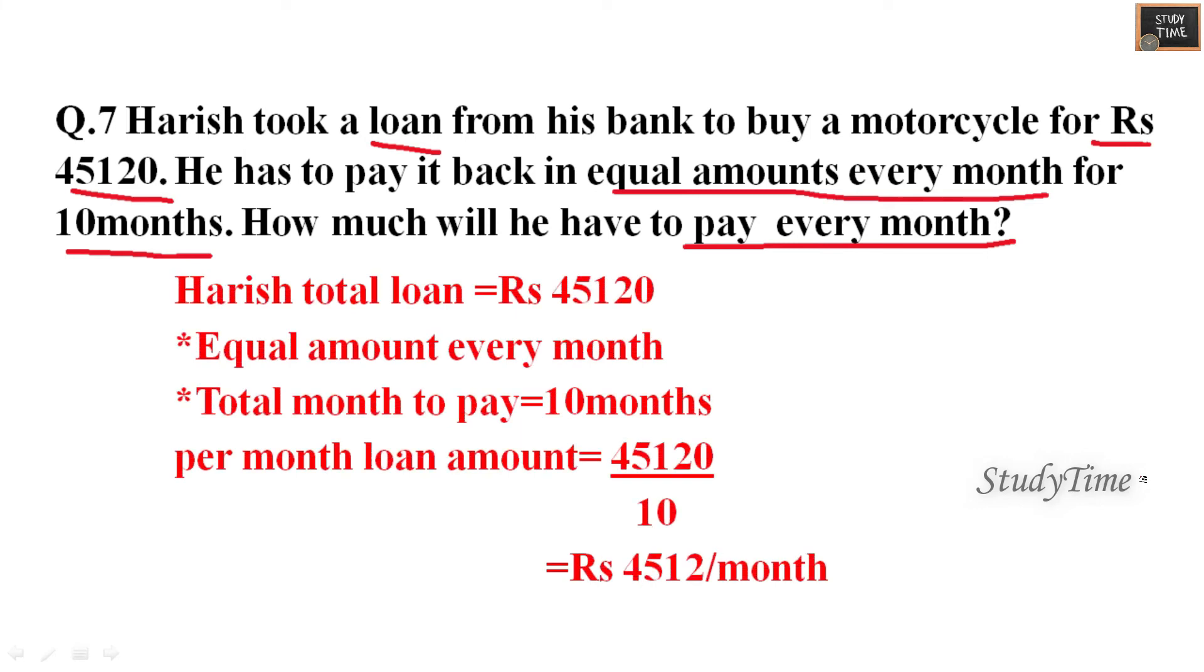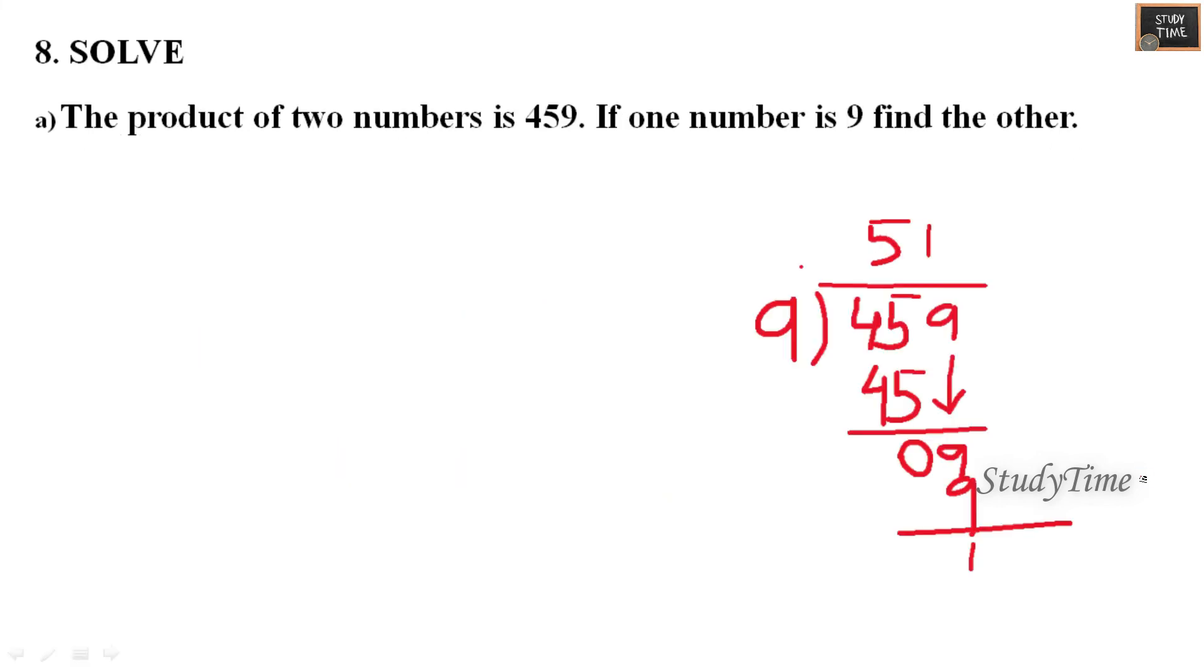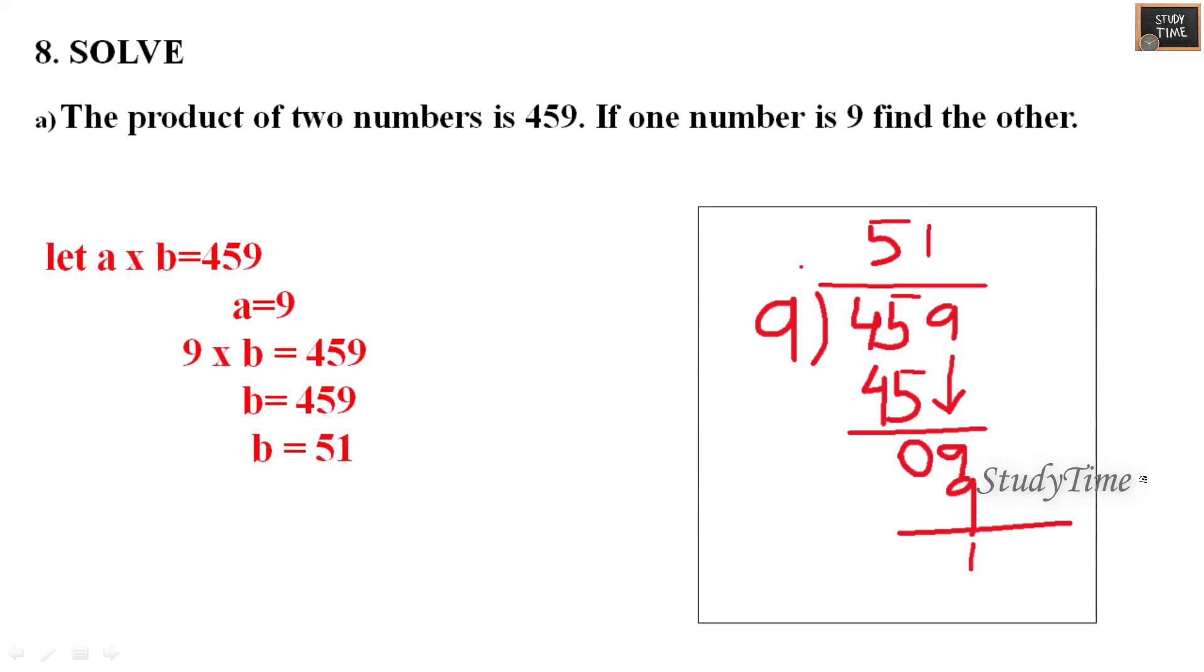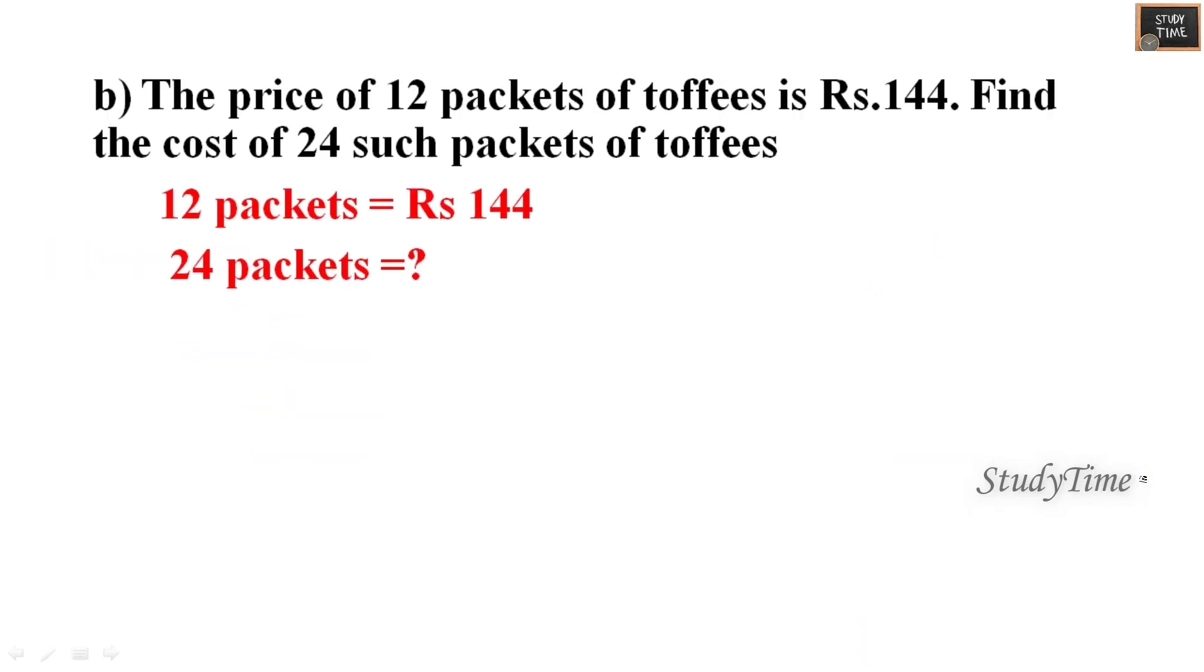The product of two numbers is 459. One number is 9, another number is 51. Next, the price of 12 packets of toffee is rupees 144. What is the cost of 24 such packets?